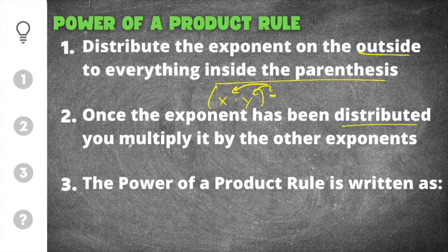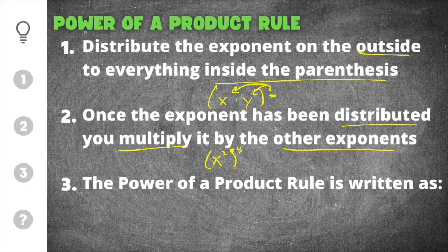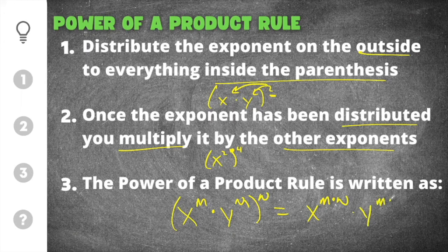Once the exponent has been distributed, you multiply it by the other exponents. This goes back to the power of a power rule. When you had to raise a power to a power, that means to multiply. So that rule still applies for power of a product, except you distribute to everything inside of the parentheses, and then you multiply the exponents. So x to the m times y to the m, raised to the n power, is equal to x to the m times n, times y to the m times n.